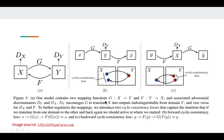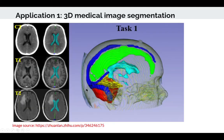Here you can see the main structure of CyclicGen. I won't go deep into the details of this structure. This is one of the applications in 3D medical image segmentation. Here you can see at the right hand is the top view of the human brain, and this part is the right hand side view. This is one of the applications to segment different parts of the human brain from medical images.